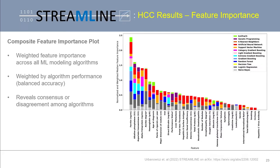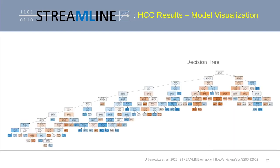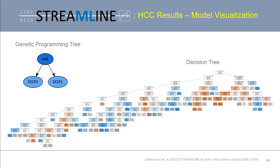These composite plots allow for a holistic look at feature importance consensus or disagreement across all machine learning algorithms, weighted by how well those respective algorithms actually performed. In addition, box plots of evaluation metrics and feature importance scores for each individual algorithm are also generated. Streamline can also generate direct model visualizations for decision trees and genetic programming models, which can be illustrated as trees representing mathematical functions.